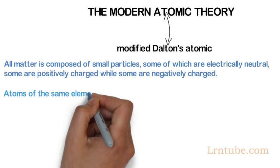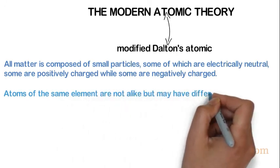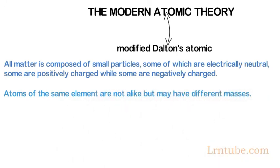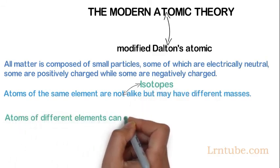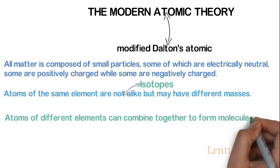Atoms of the same elements are not alike but may have different masses. An element may have atoms with different masses. These atoms of an identical element with different masses are called isotopes. Atoms of different elements can combine together to form molecules.